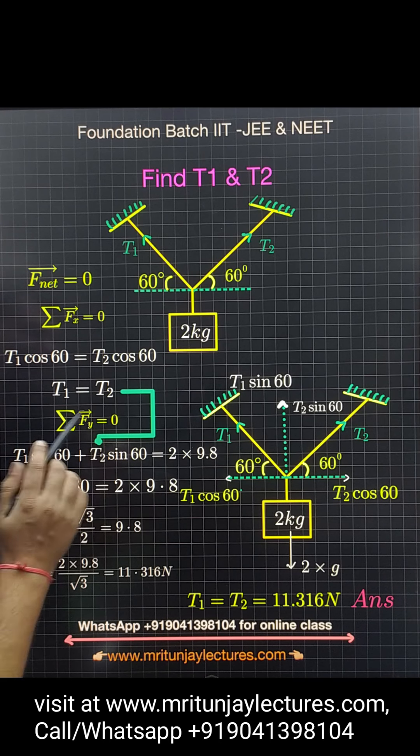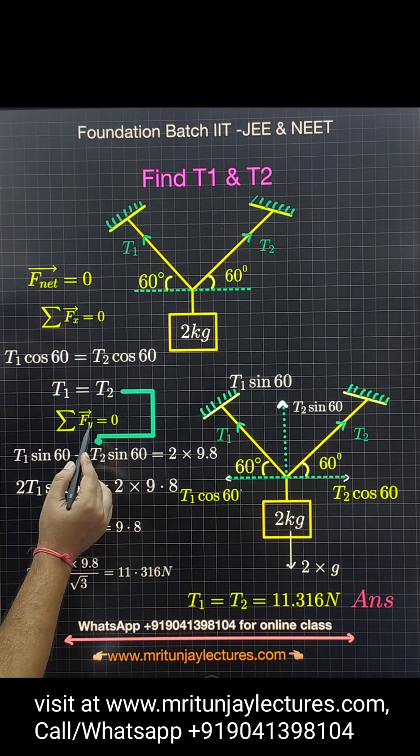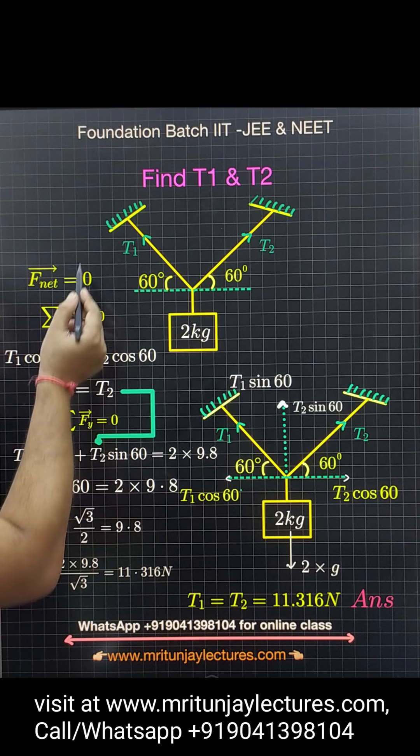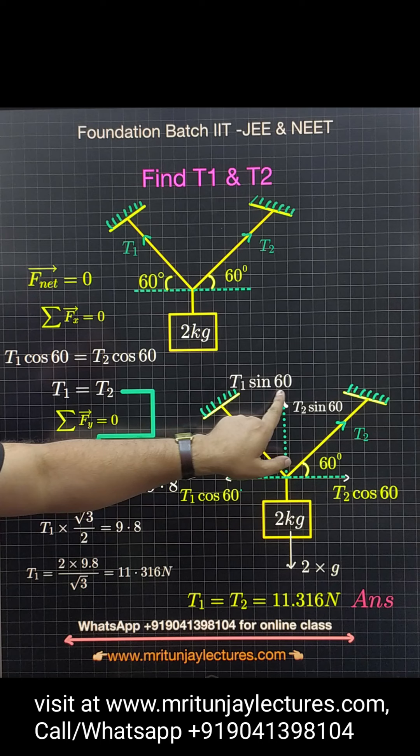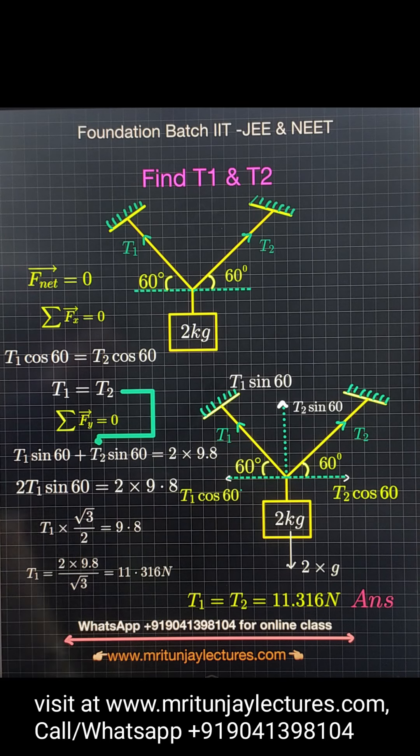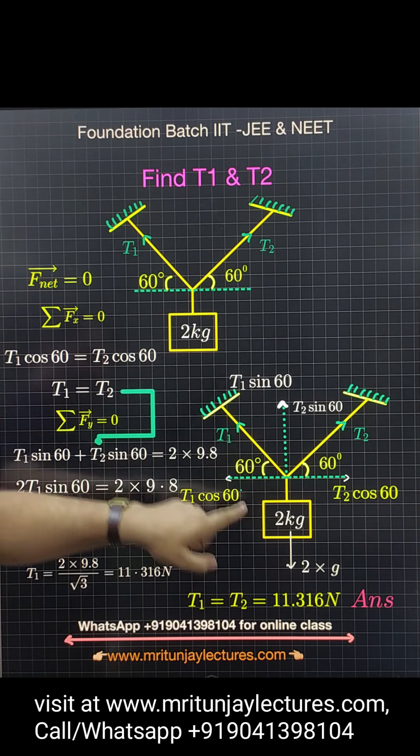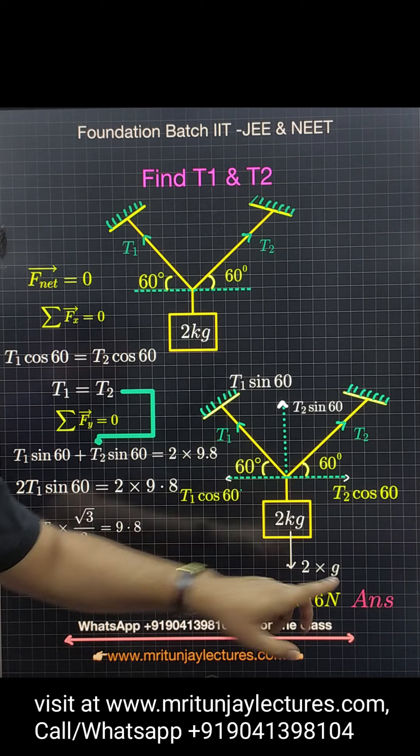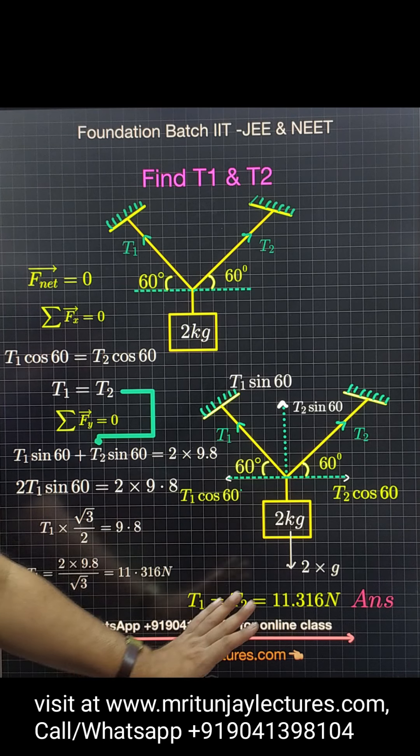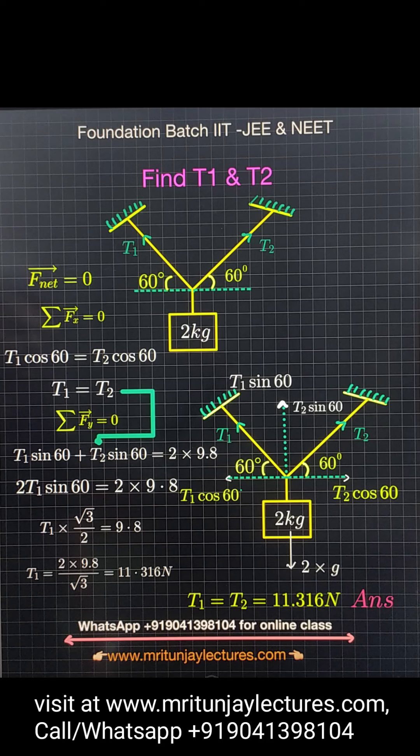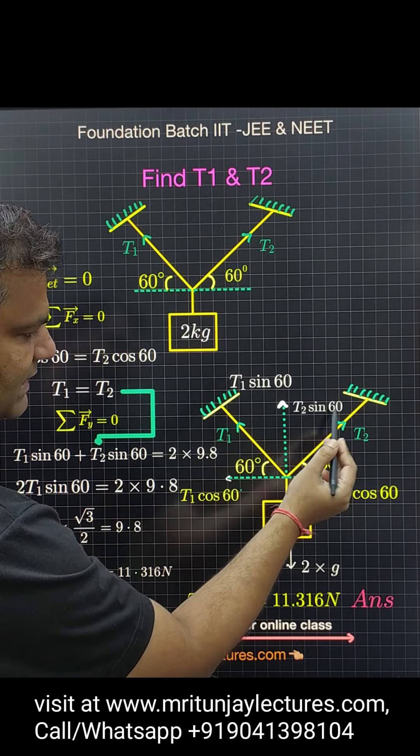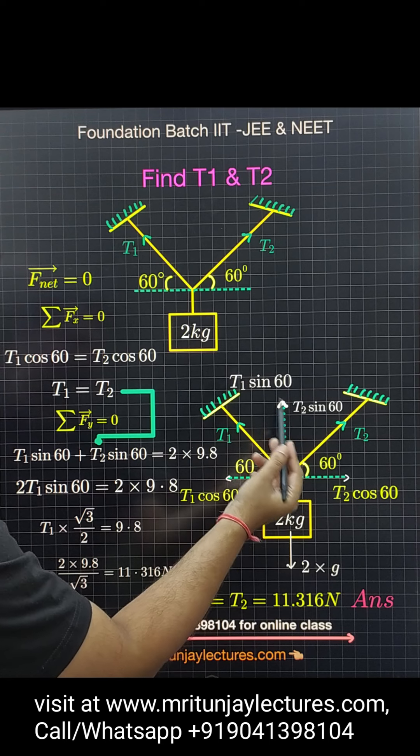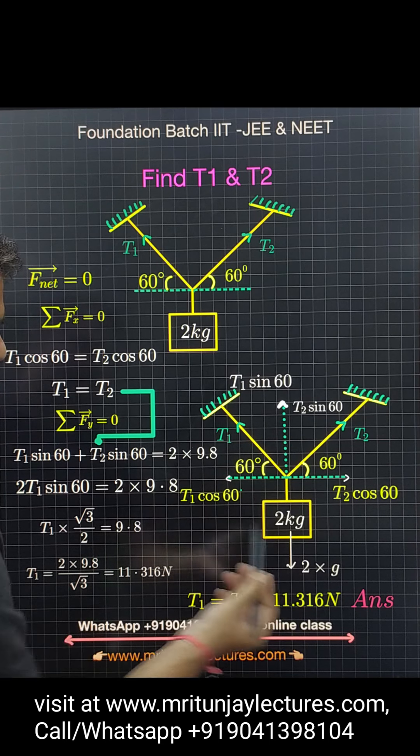Now, the net force in the y direction is also zero. So we have T1 sin 60 plus T2 sin 60, and the weight of the 2 kg block works downward, which is 2 times g. Both are in the same direction, so we add them, giving 2g, that is 2 times 9.8 meters per second squared.